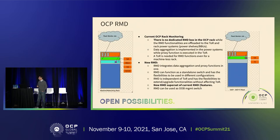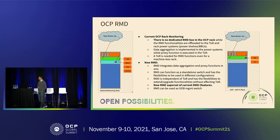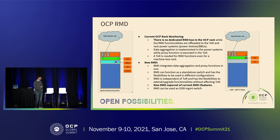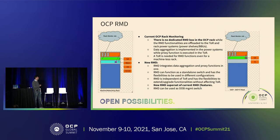Let's spend some time on the gaps in rack monitoring that we are seeing today. On the right is the OCP standard, and on the left is the new RMD — the rack management device — that we are proposing. On the older one, there is no dedicated RMD in the OCP rack; the RMD functionalities are offloaded into the power systems and the top-of-rack switch. Data aggregation is implemented in the power systems while the proxy functionality is offloaded to the top-of-rack switch.